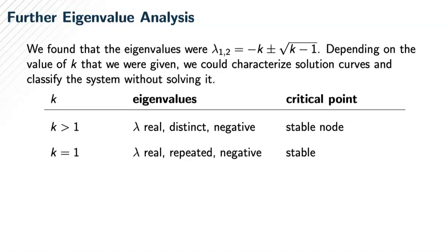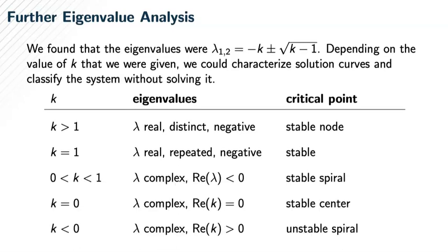If k equals 1, we would have had a repeated eigenvalue. λ₁ and λ₂ would have been exactly equal to -1, stable because the eigenvalues are negative. For other values of k, we could consider these other cases as well.